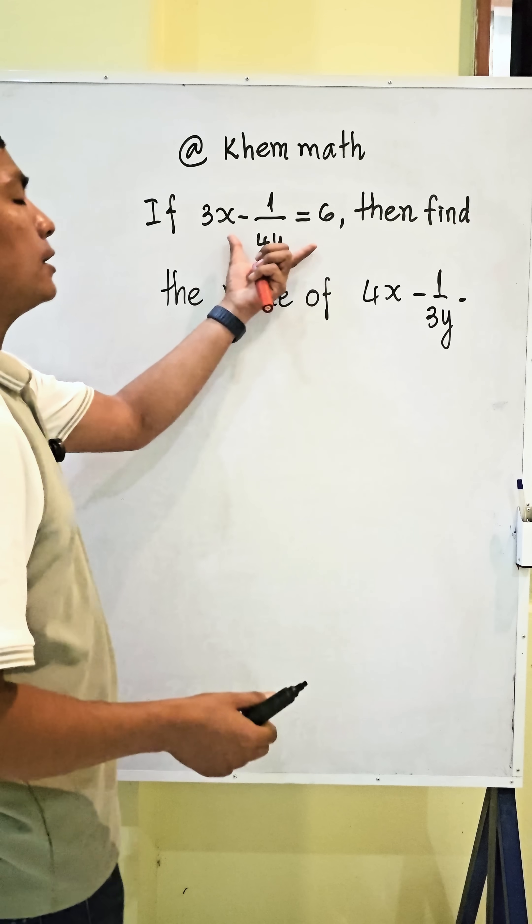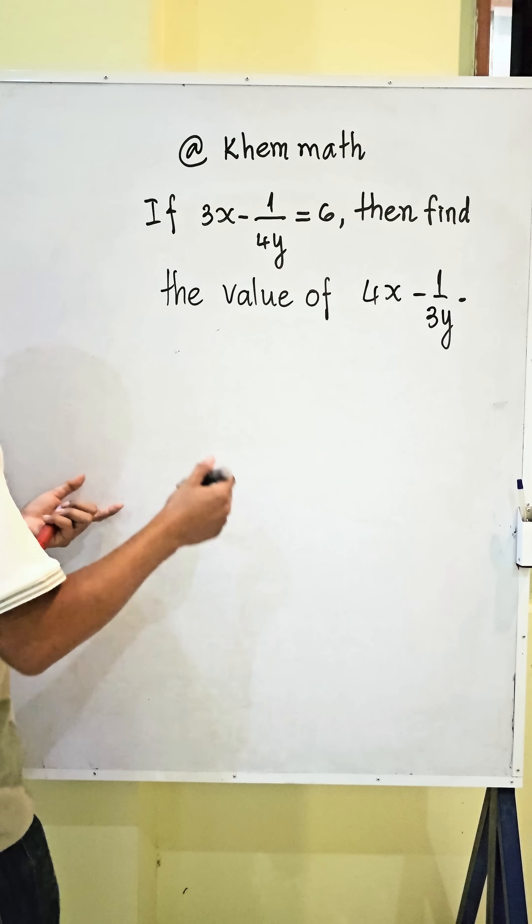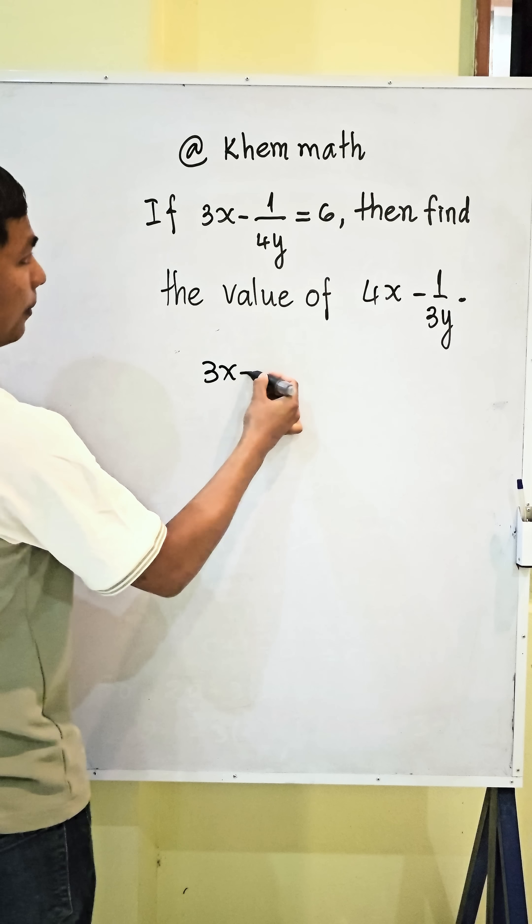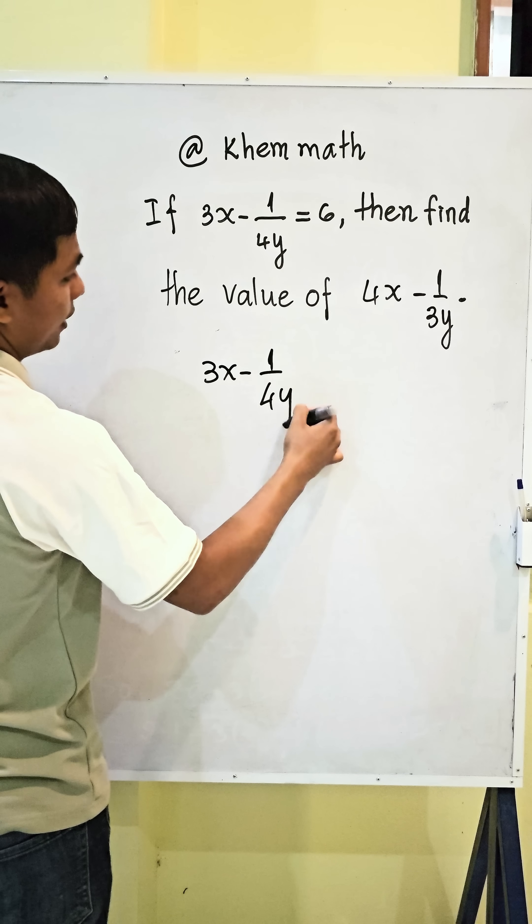Okay, for this equation, you have 3x minus 1 divided by 4y equals 6.